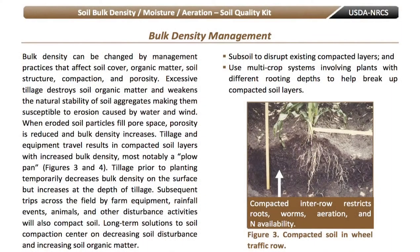Managing for bulk density means anything we can do to decrease compaction — how we manage our traffic in the field, our soil cover, our soil organic matter. Anything that can decrease compaction and increase soil organic matter is going to be a positive.